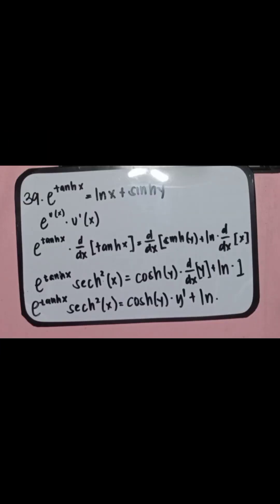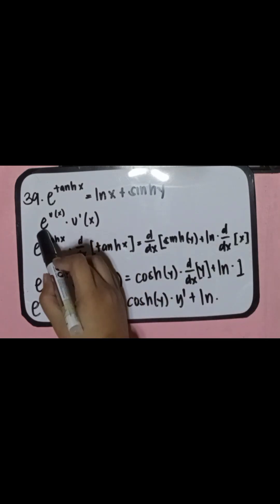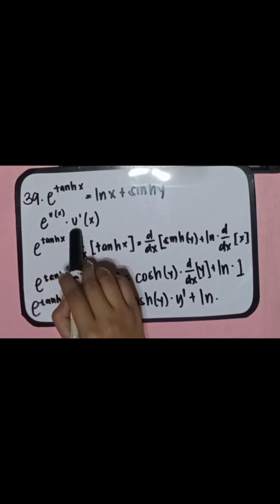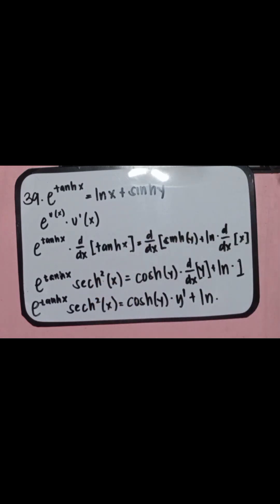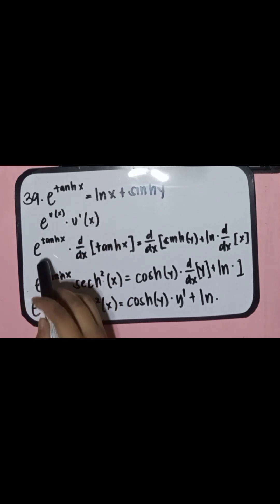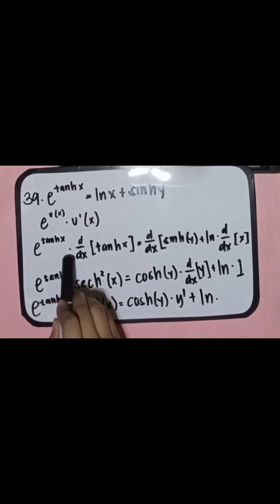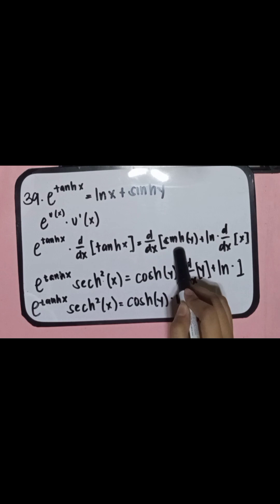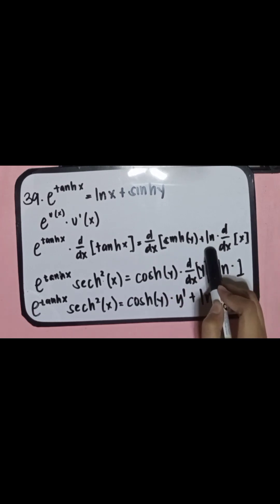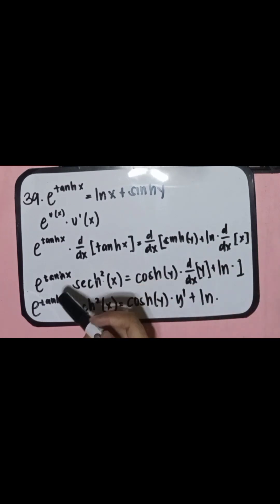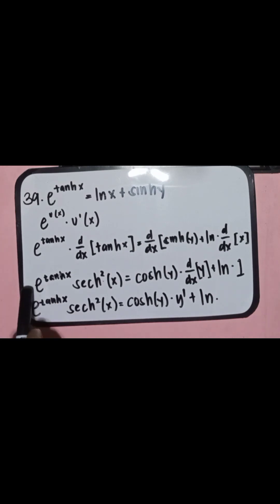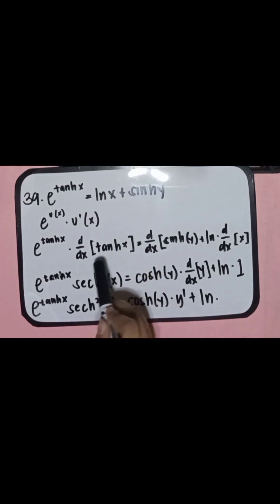Next equation: e raised to hyperbolic tan x equals ln x plus hyperbolic sine y. We apply the rule for e raised to u: e to the u times u prime. Copy the first function e raised to hyperbolic tan x multiplied by its derivative, equals the derivative of hyperbolic sine y plus ln multiplied by the derivative of x. The derivative of hyperbolic tan x is hyperbolic secant squared x.